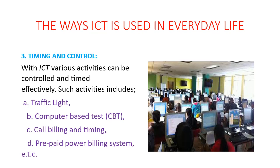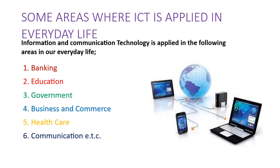These are the three ways we can use ICT in our everyday life. There are many other ways, but these are the ones we want to look at: communication, information gathering, processing and management, and timing and control. These three ways, with the examples we have given, are the three ways we can use ICT in our everyday life.